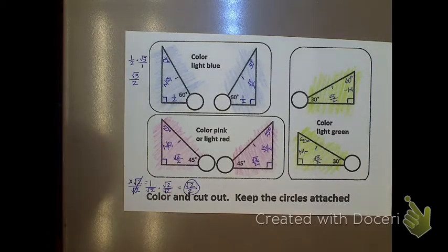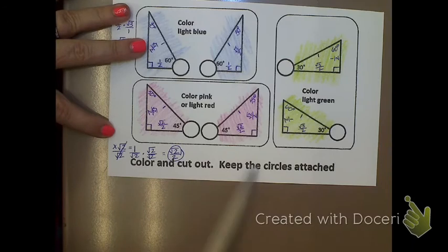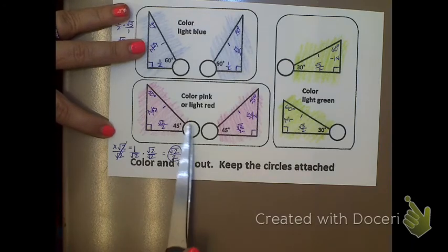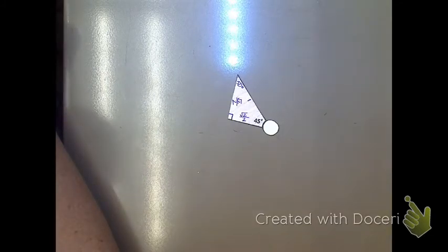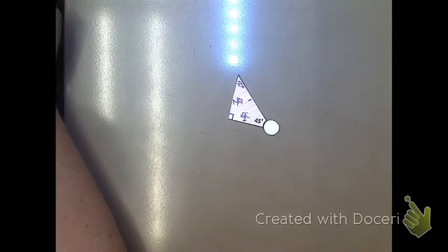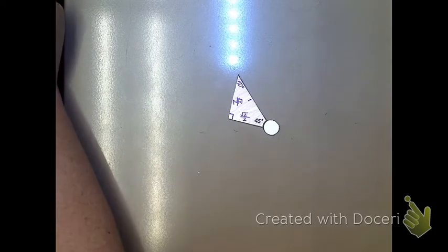So now I'm going to cut them out, making sure that I do not cut these little circles off. I need the circles to stay on the triangles. So there I have one of my triangles cut out. That's one of the pink ones. I know the color is a little hard to see here, but I will go ahead and cut out the rest of them.